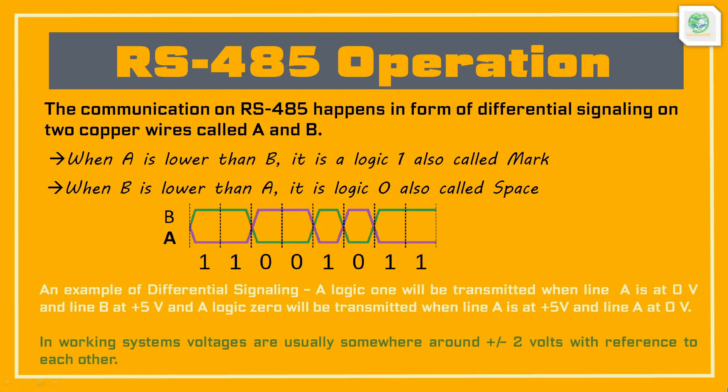A very important thing here is differential signaling. A logic 1 will be transmitted when line A is at 0V and line B at +5V, i.e., line A is lower than line B. A logic 0 will be transmitted when line A is at +5V and line B at 0V, i.e., line B is lower than A. In a real-world scenario, voltages are usually somewhere around plus or minus 2V with reference to each other.